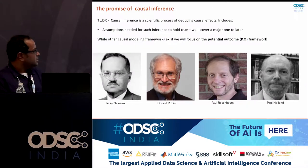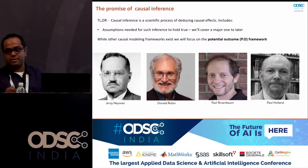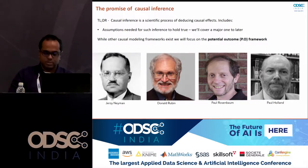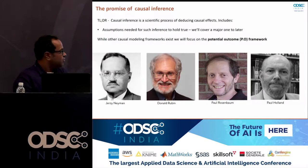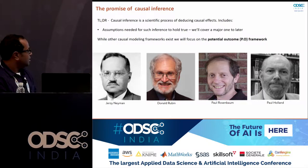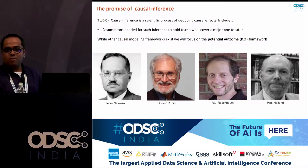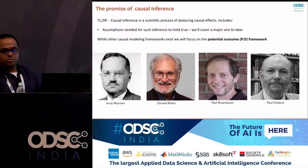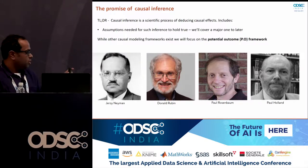Causal inference is what gets you to the deduction of causal effects. There are more than one analytical frameworks possible; we will focus on one today called the potential outcome model, or PO model. Like any statistical framework, it is based on a bunch of assumptions, and we will focus on one in particular. The pioneers of the potential outcome model include Jerzy Neyman in the 1920s, when this entire thing began. It was reinvigorated in the 70s by Donald Rubin — this model is alternately called Rubin's causal model — and then his associates Paul Rosenbaum and Paul Holland took up the mantle.